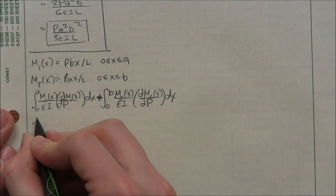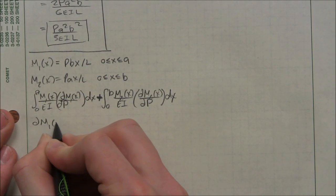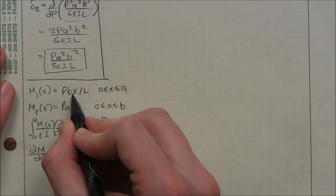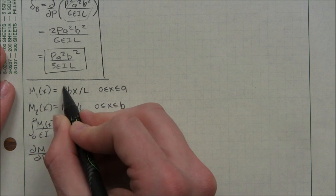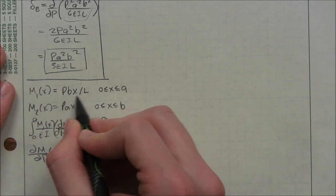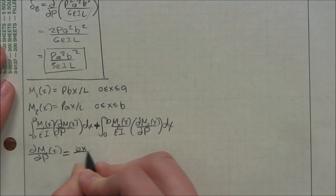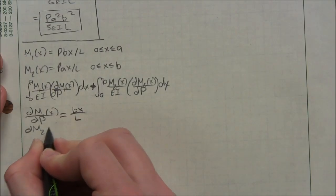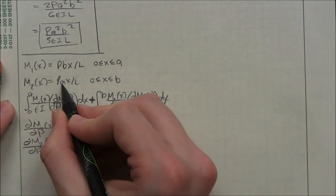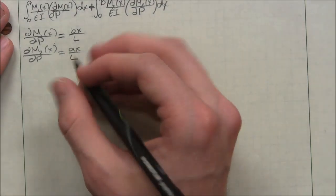Okay, I like to calculate first what our dM1 dP is. PBX over L, P is our only variable and it's just going to go away and we'll be left with the constants. So it's BX over L. Same thing with M2 of X. It's going to be AX over L.